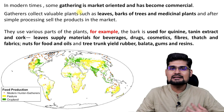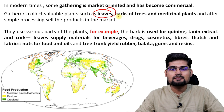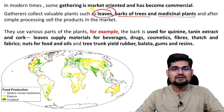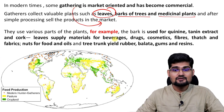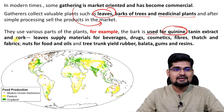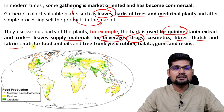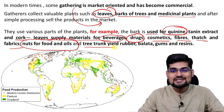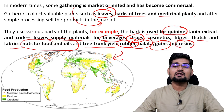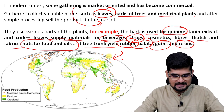In modern times, gathering has occupied a commercial base as well. We are collecting leaves, bark of trees and medicinal plants for so many commercial purposes in the market. For example, the bark used for quinine — a cure for malaria — tannin extract and cork, leaf supply materials for beverages, drugs, cosmetics, fibers, thatch, fabrics, nuts for food and oil, and tree trunks yield rubber, gums and resins. So these gathering activities are used for commercial purposes.